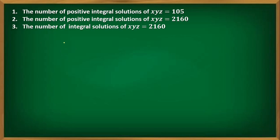Let us see the first question: the number of positive integral solutions of x·y·z = 105. Here we have the product of the variables x·y·z = 105. If you want to find the number of positive integral solutions of x + y + z = 105, we have already discussed how to solve those problems. But here we have x·y·z = 105.